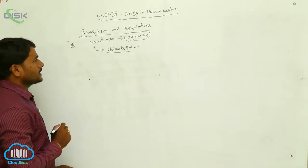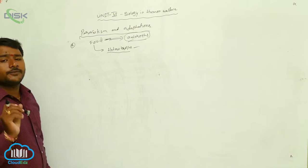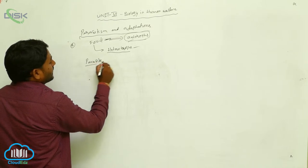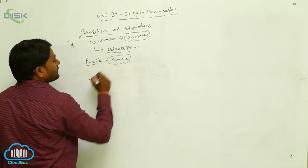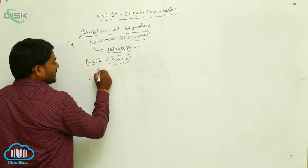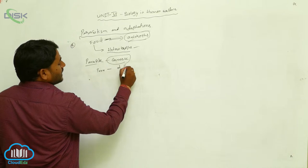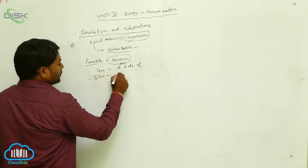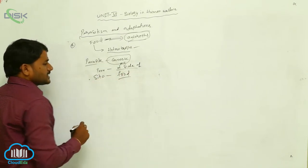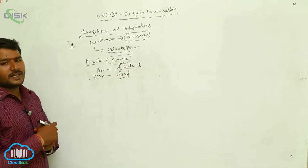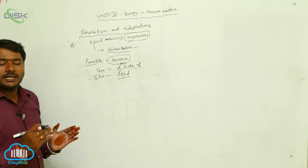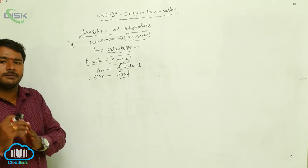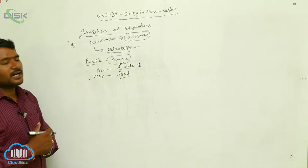Autotrophs and heterotrophs. Let us see the definition of the parasite. Generally the word parasite is taken from the Greek language. Here 'para' means 'at the side of' and 'sitos' means 'food'. So the meaning of parasite is one eating on another's dinner table. That is called as parasitism.